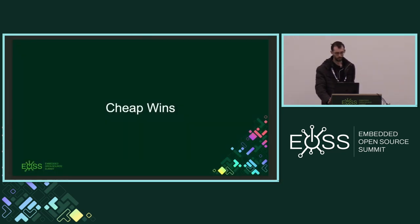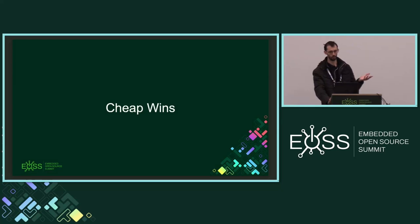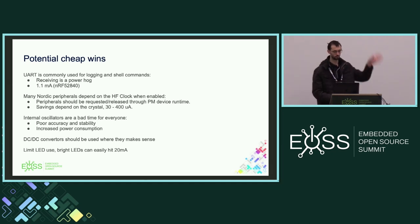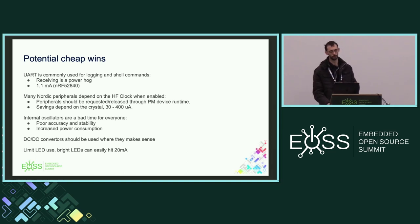Alright — you've got your hardware, you've got some drivers, you measure power consumption and it's more than you wanted. What are some cheap wins without doing too much work? UART is commonly used for logging and shell commands, which means receive is turned on for shell. But UART receiving is a power hog — on the nRF52840 having UART receive running is 1.1 milliamps, which is about 200 times more than our baseline current consumption. If you don't use the UART shell there's no reason to have it running.